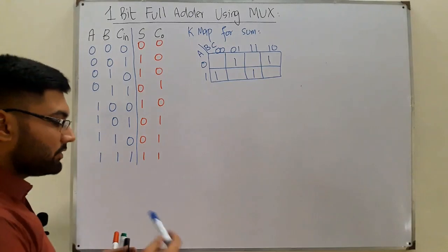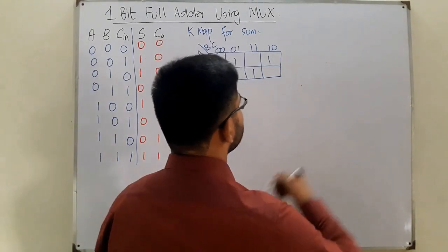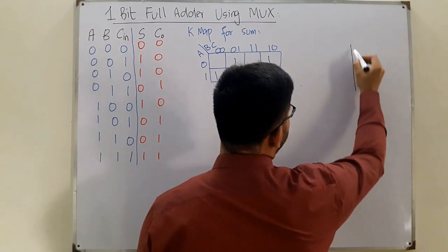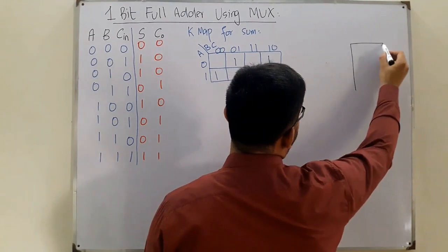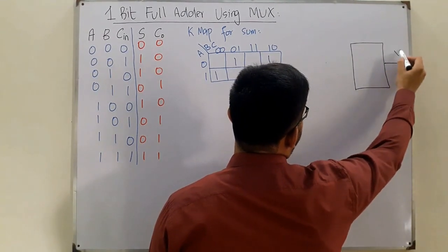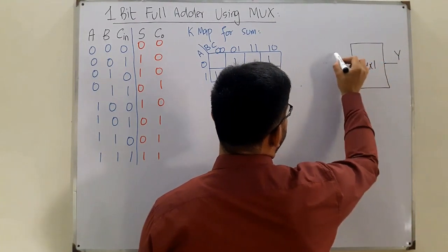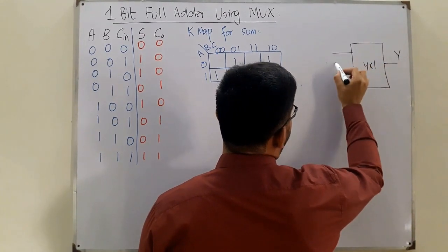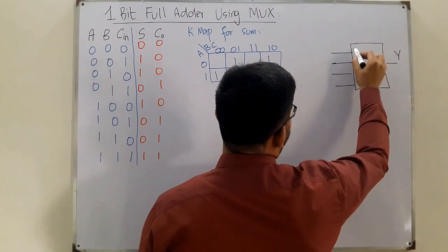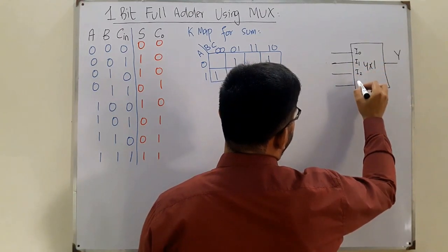Now we assign the select lines. Let's draw a 4×1 multiplexer with output Y. It has four inputs: I0, I1, I2, and I3, and two select lines: S1 and S0.